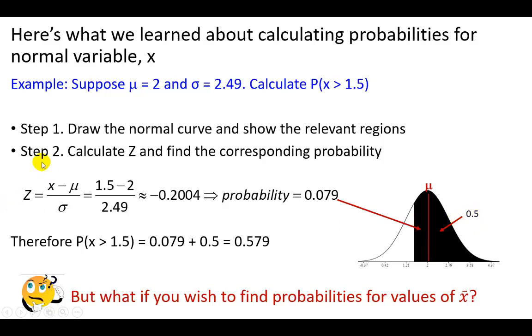To do so, step 2: we calculate the Z value and find the corresponding probability. For the random variable X, this is the definition of Z. We substitute and solve, and that comes out to be -0.2. Then we're going to go to the Z table and look up the probability corresponding to it.